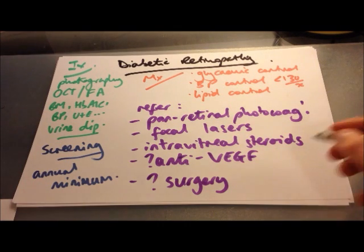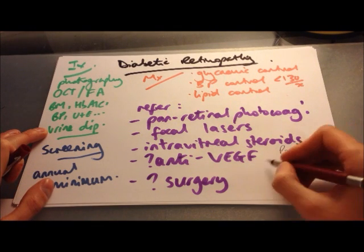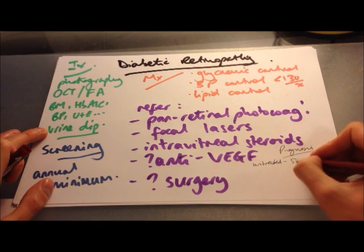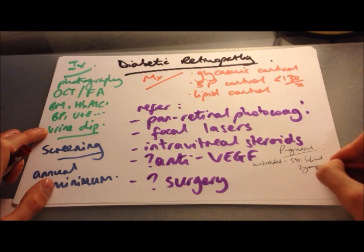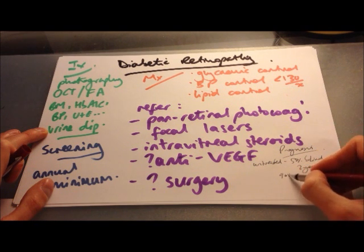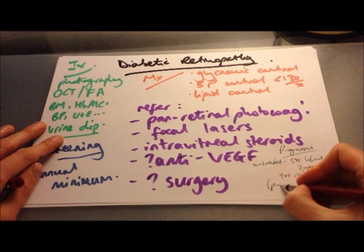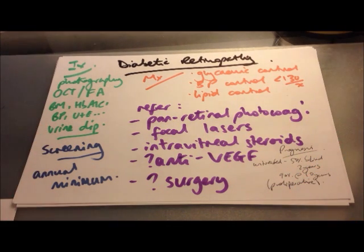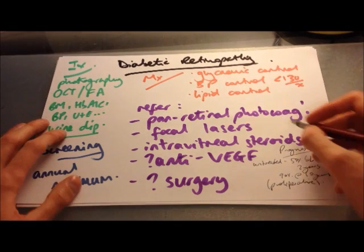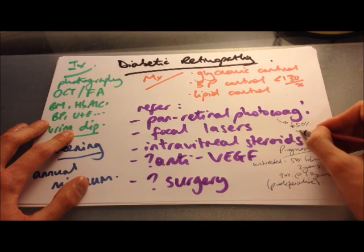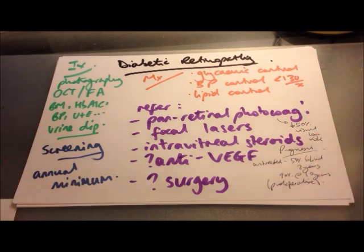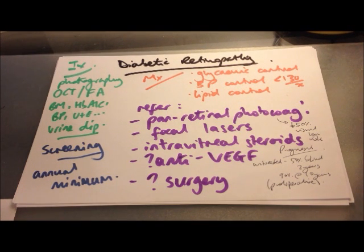Prognosis: in untreated patients, 50% are blind within 2 years and 90% are blind at 10 years if they have proliferative disease. With panretinal photocoagulation, there is a 50% reduction in visual loss — making it a very effective treatment.